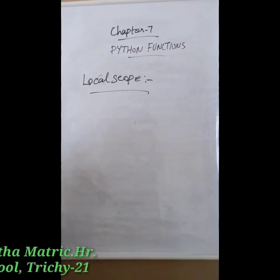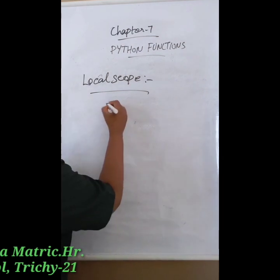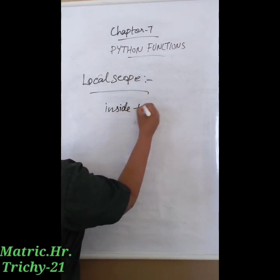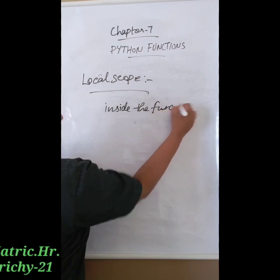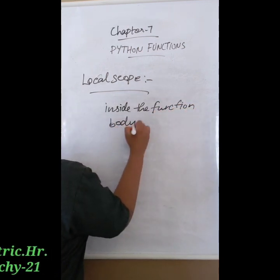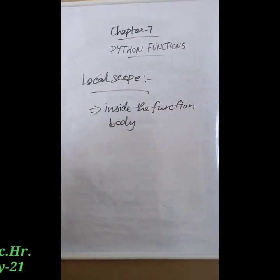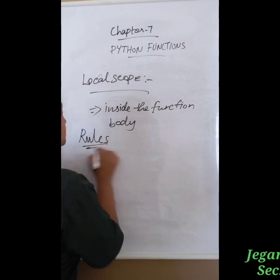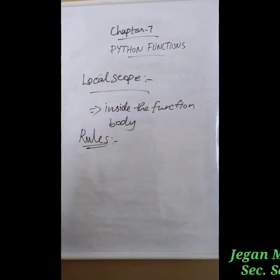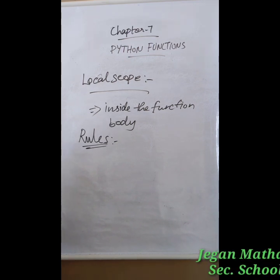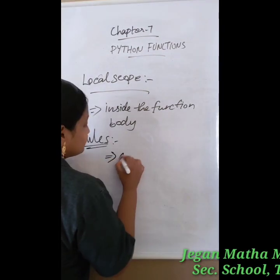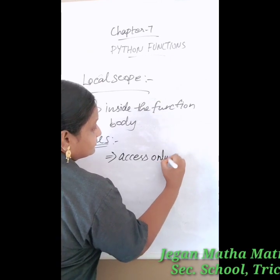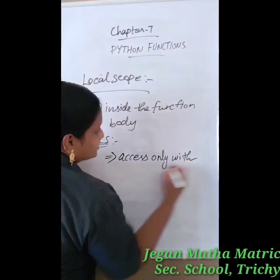Local scope means a variable declared inside the function body — it is declared inside the function body. A variable in local scope is also called a local variable. The first rule: a variable with local scope can be accessed only within a function or block. We can access the variable or data only within the function or block.